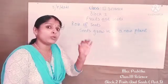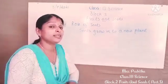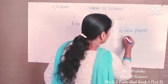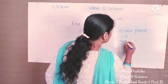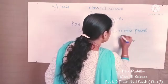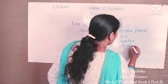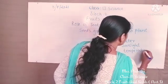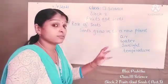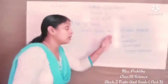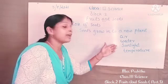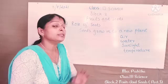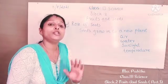So seeds grow into a new plant. What are the things needed for seeds to grow? Seeds need air, water, sunlight, and the right temperature. When all these are provided, the seeds grow into a new plant.